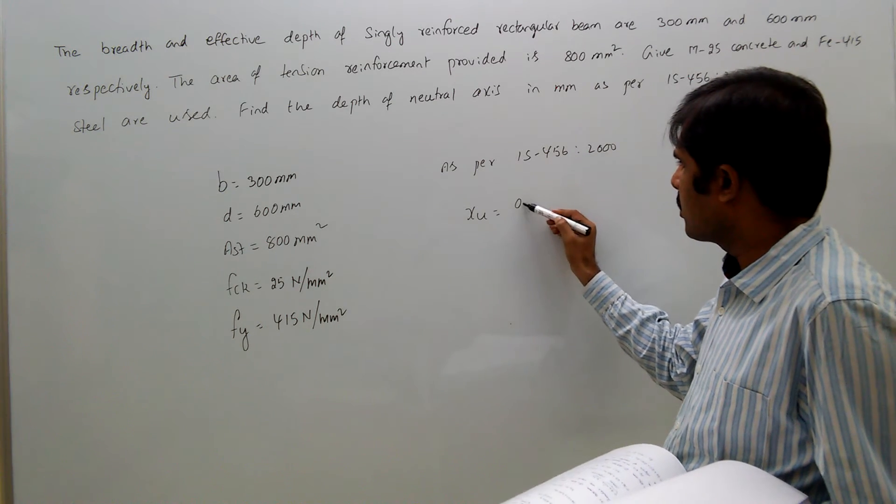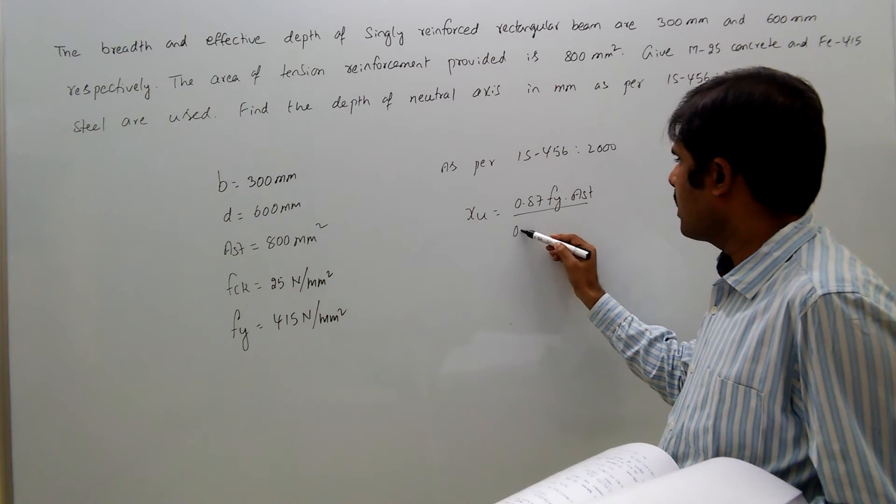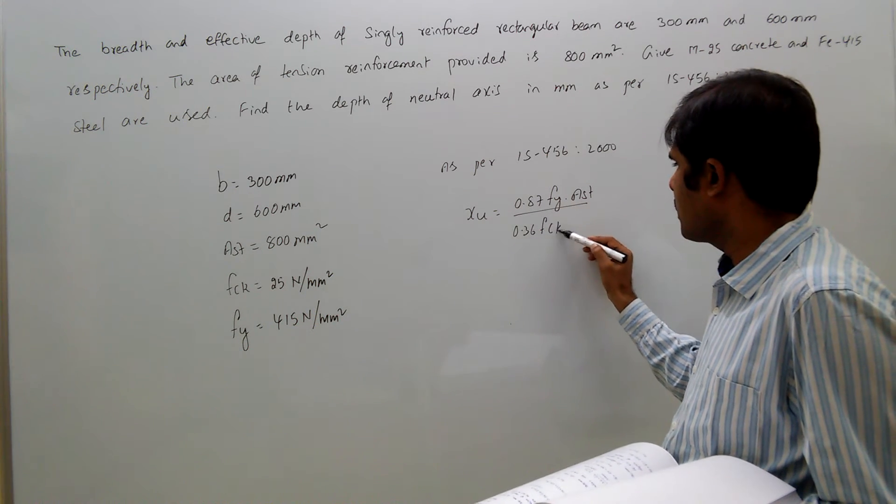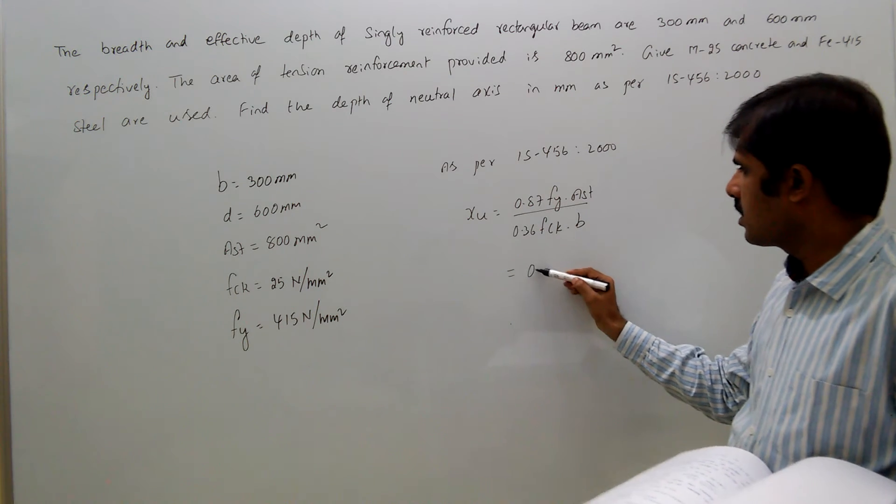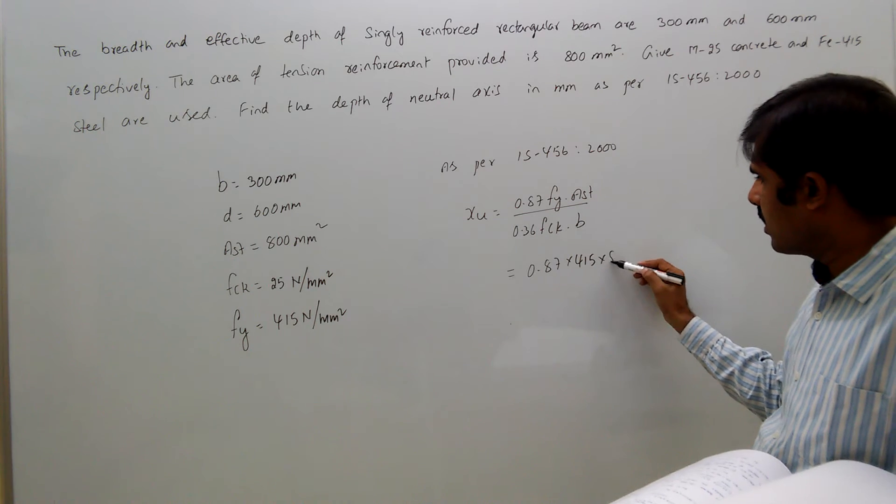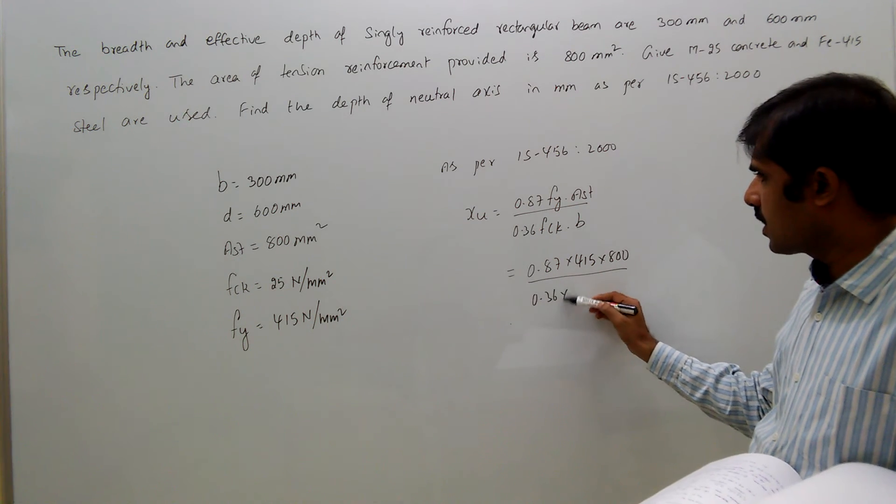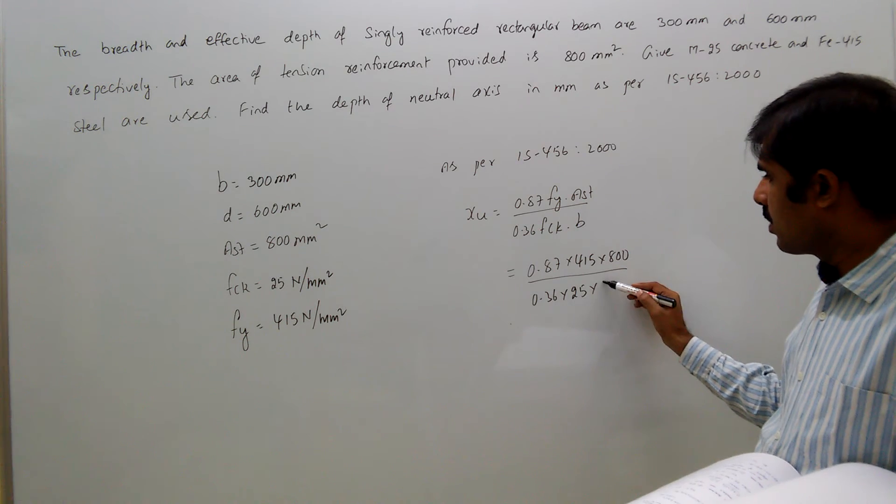x = (0.87 × fy × Ast) / (0.36 × fck × b). That is 0.87 × 415 × 800 divided by 0.36 × 25 × 300.